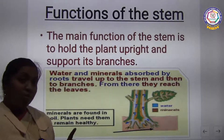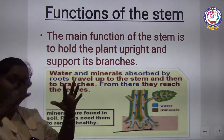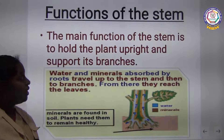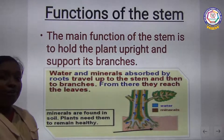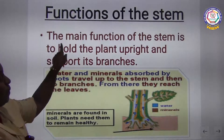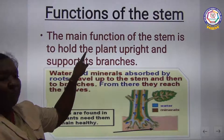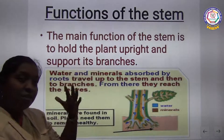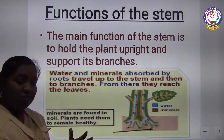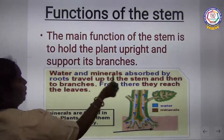So you have seen the differences in stems. When it is a big tree, you call the stem a trunk. Now what are the functions of the stem? The main function of the stem is to hold the plant upright. All plants and trees are standing with the help of a stem — that is the first function.